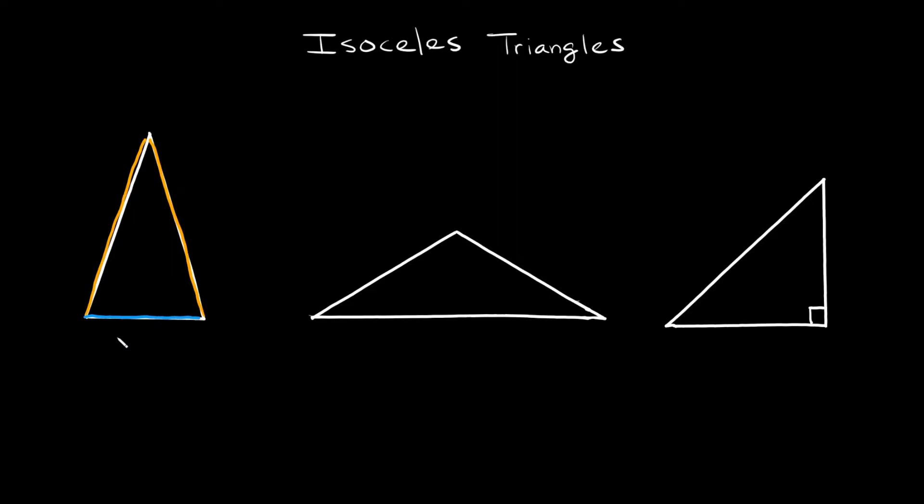Something else you should know is that they also have two angles that are the exact same angle. So in this case, this angle and this angle would be exactly the same, and then this other angle would be different, the double angle.